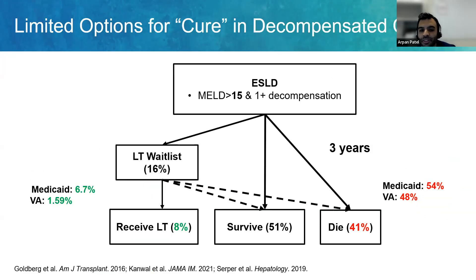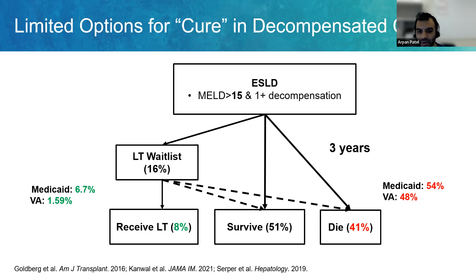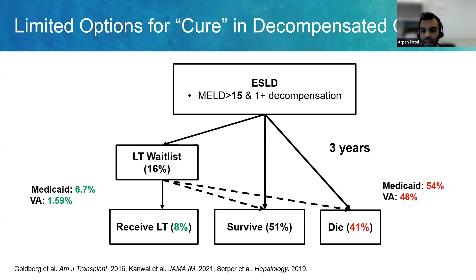It's important to remember that death is a very likely outcome for our patients with liver disease. This study from a few years ago shows the outcomes of patients with end-stage liver disease at three years. A minority actually make it to a liver transplant wait list — about 16%. Very few end up getting a transplant. Out of 100 patients being considered for liver transplantation, only 8% receive a liver transplant, which differs depending on whether they're Medicaid or VA beneficiaries. The vast majority will die within three years. Many of us from high academic transplant centers may believe the numbers are higher, but these are the true numbers.